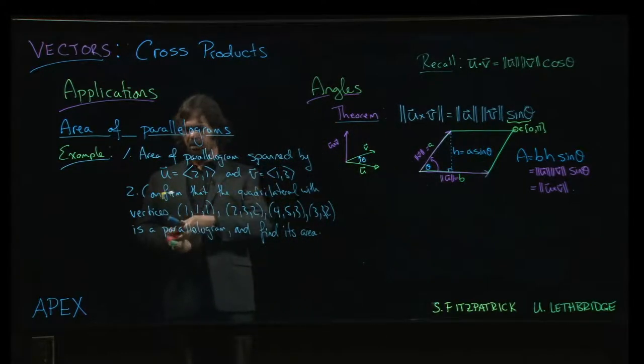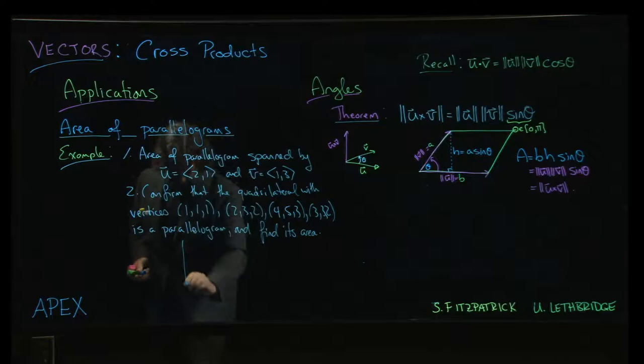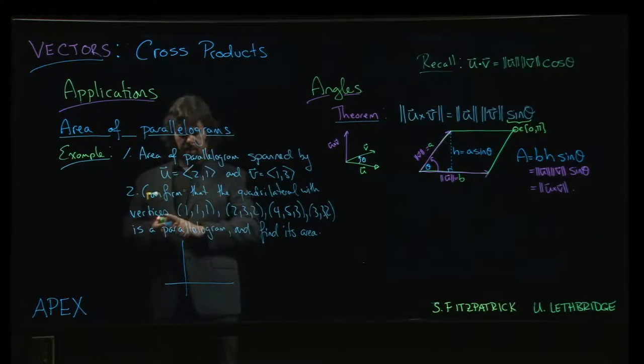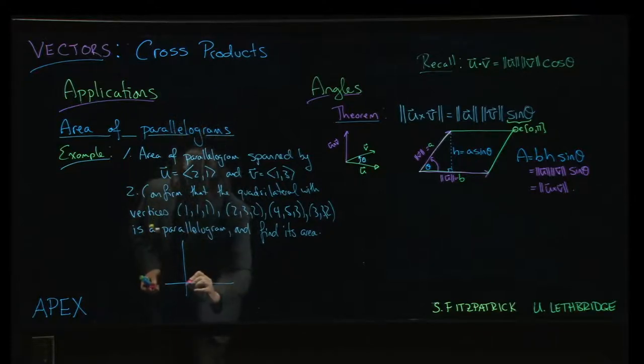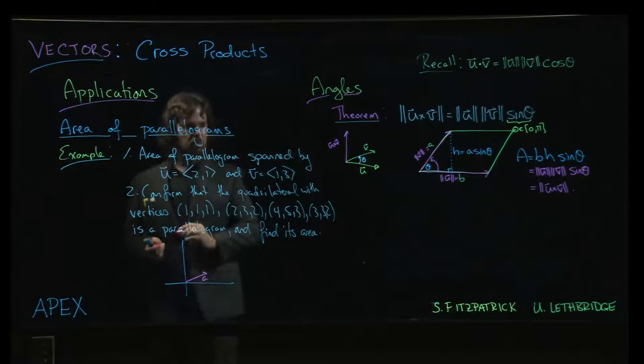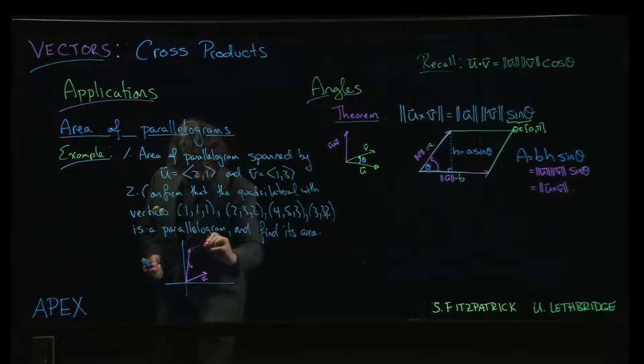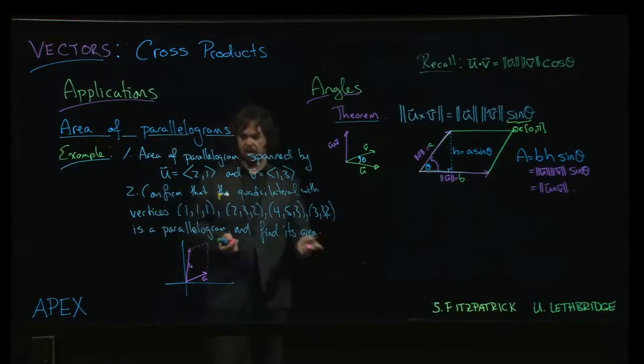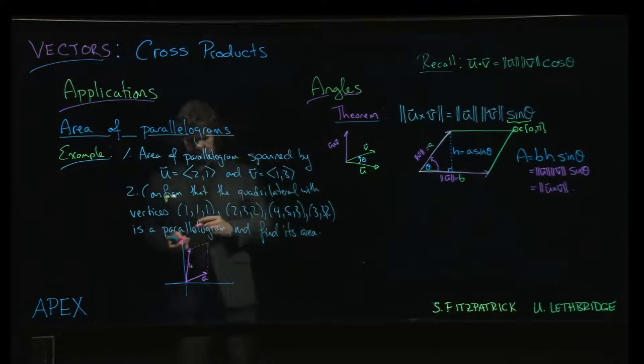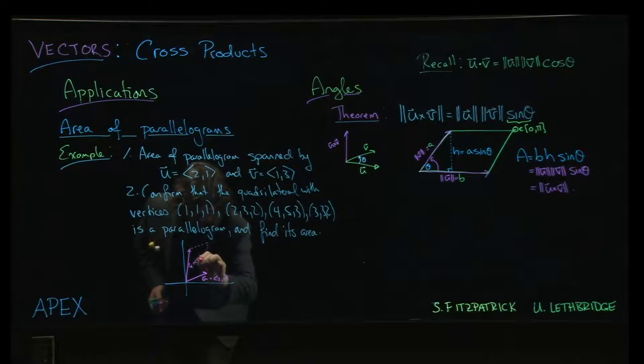Now, if I'm looking at the first problem, it should concern you slightly, because the two vectors that I'm given in question one are vectors in the plane. u and v. You can see the parallelogram that they span. We will find the area of that thing. What you can do is take u, which is (2,1), and v, which is (1,3).